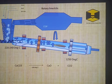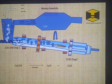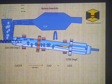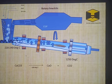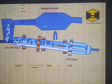A rotary lime kiln can be as long as 100 meters, having a diameter of 3.2 meters up to 4 meters.